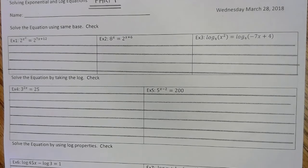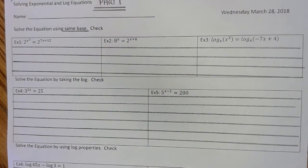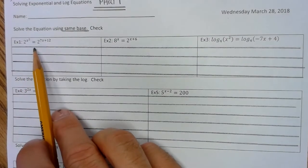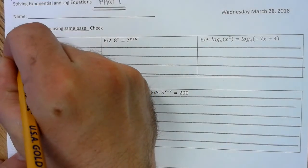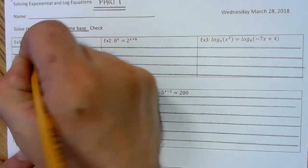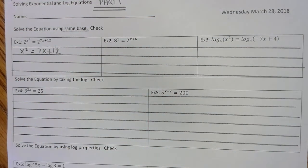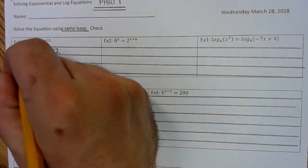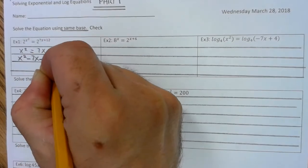Alright, Example 1: solve the equation using the same base. So since the bases are the same — they're both 2 — we know that the exponents are equal. So we have x squared equals 7x plus 12. Now we're going to subtract 7x and 12 from both sides, so we have x squared minus 7x minus 12 equals 0.